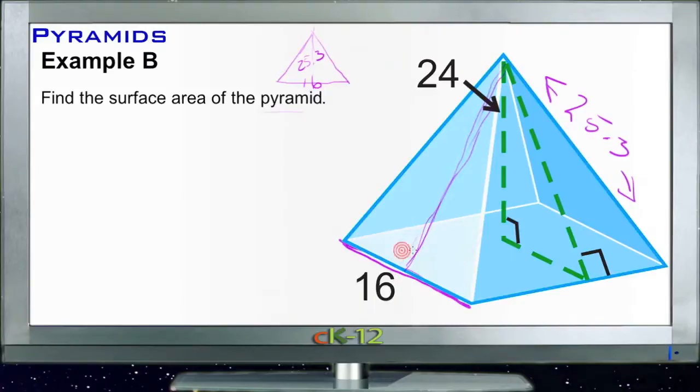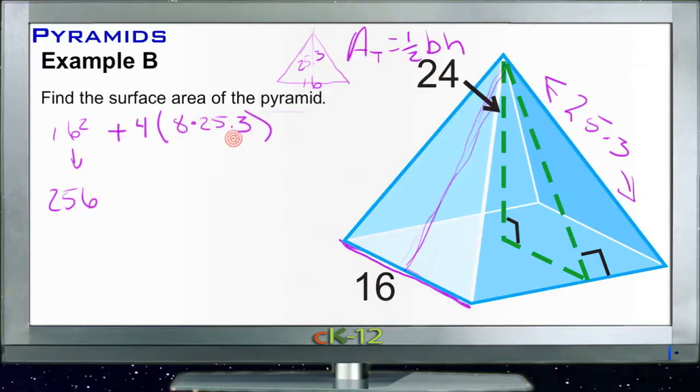So finding the area of the base is easy. It's just 16 squared, or 256 square units. Then what we need to do is add each of the four faces. They're all going to be the same. So it'll be four times, and then we're going to find the area of each of these triangles. Remember the area of a triangle is one half base times height. So we're going to take half of the base, that's half of 16 is 8, times 25.3. So each of those faces is going to be 8 times 25.3, and then there's four of those.